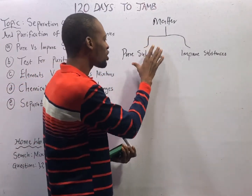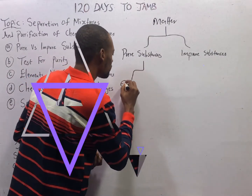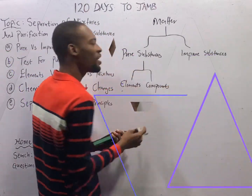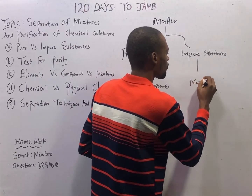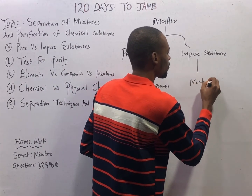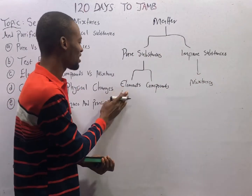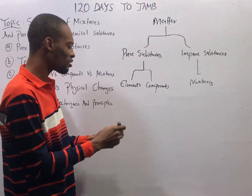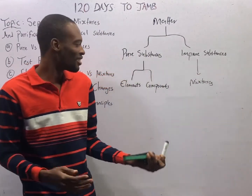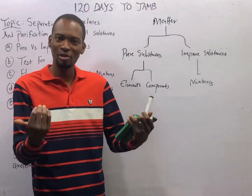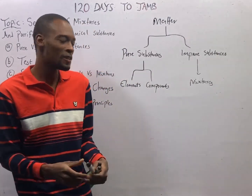So the pure substances are elements and compounds. The impure substances are mischiefs. Elements is a substance that cannot be broken down or split by an ordinary chemical process. Compounds are made up of two or more elements combined chemically.